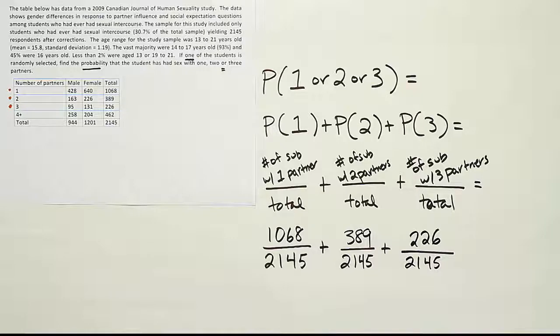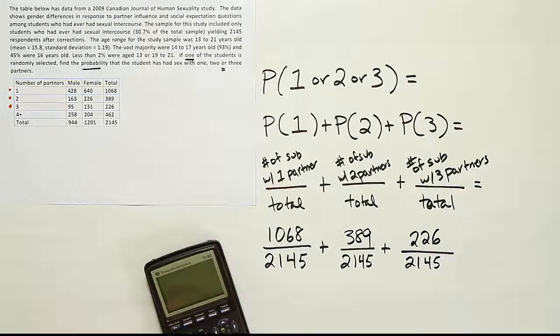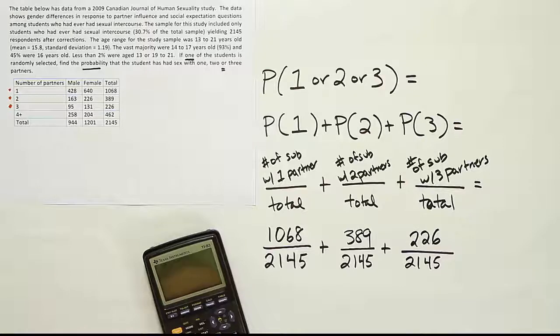Now add those up, divide by the total, and you're finished. So it'll be 1,068 plus 389 plus 226.